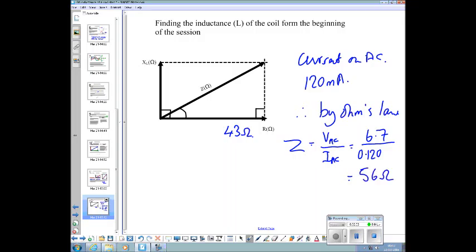56 ohms, then, two significant figures. So now we know Z, 56 ohms. We can rearrange Pythagoras theorem to find XL. We can say XL is equal to the square root of Z squared minus R squared.